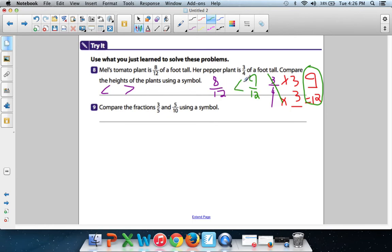So remember, where did our 9 twelfths come from? It came from 3 fourths. So 9 twelfths is greater. 3 fourths is greater. Because 9 twelfths came from 3 fourths. So 3 fourths is the big one. Okay?